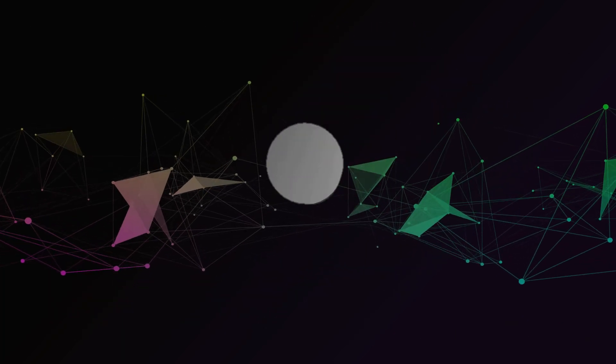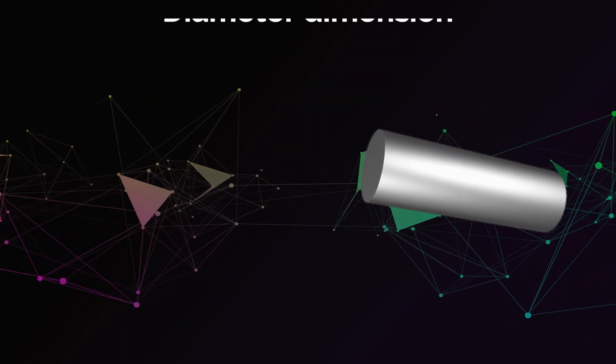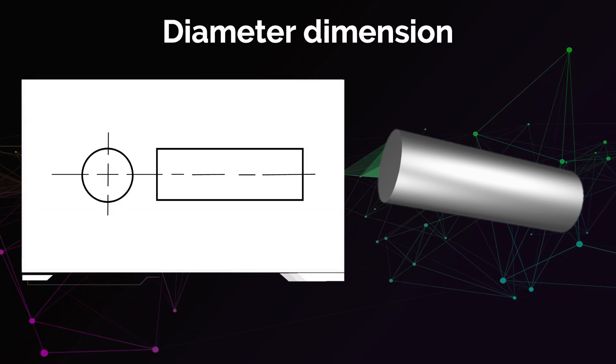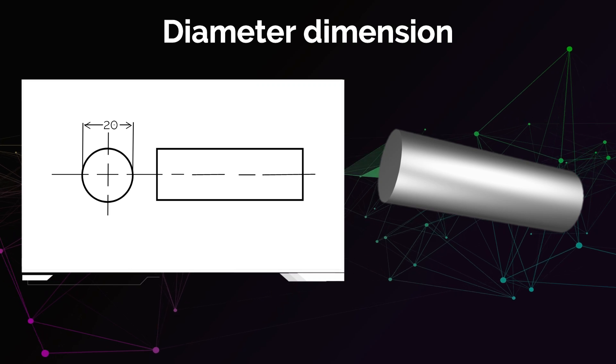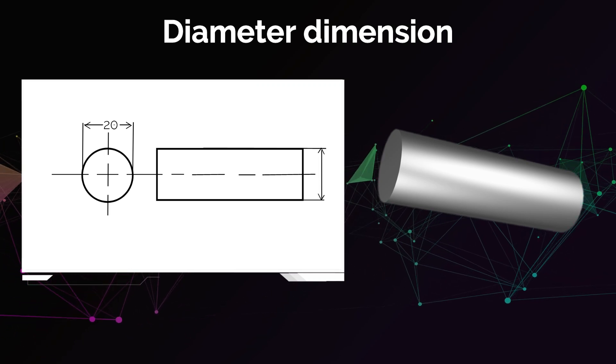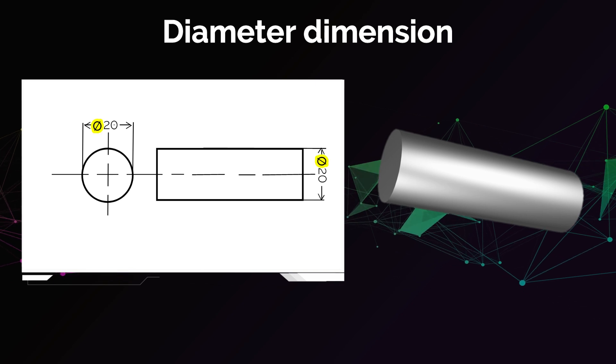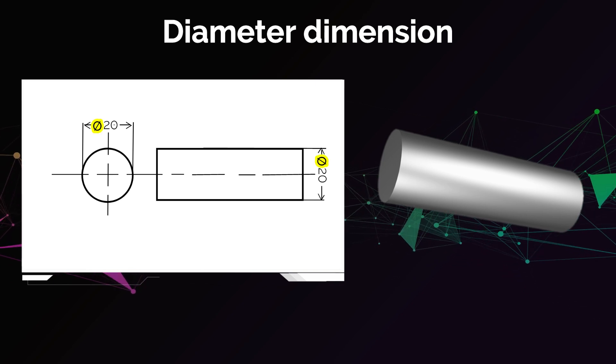Another common type of dimension is the diameter dimension, like the diameter of a cylinder, for example. You could either place the diameter dimension on the view of the drawing which shows the circular shape of the feature, or you can place it on the side view where you see the cylinder as two lines. In any case, a diameter sign is necessary to put before the number specifying the dimension.